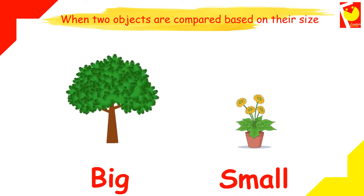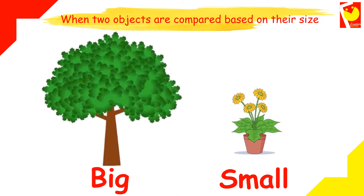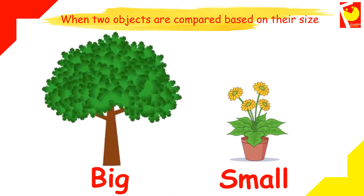This is a big tree and this is a small plant. Let's check with a few more examples.